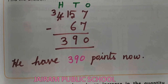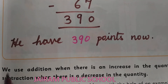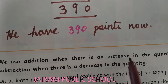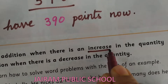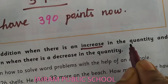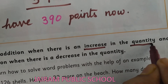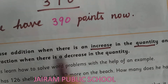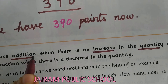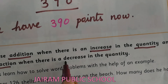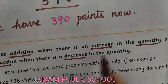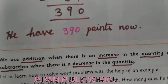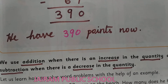See here Kanna — we use addition when there is an increase in the quantity. When will we use addition, Kanna? When there is an increase in the quantity — increase means addition. Subtraction means a decrease in the quantity — decrease means subtraction. That you have to remember.